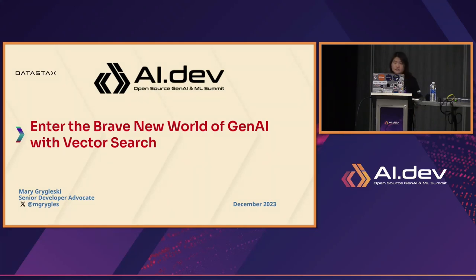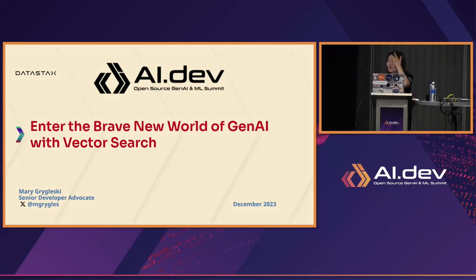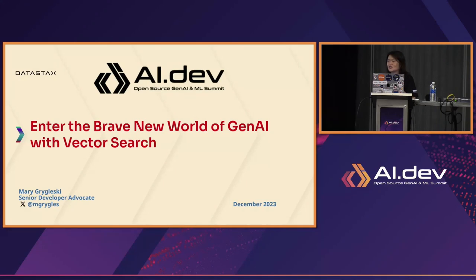My talk is really about entering the brave new world of Gen AI with Vector Search. May I ask how many of you are already working with generative AI or any forms of that? Are you also a Cassandra user by any chance? Are you using our Astra database? Not yet — okay, so this would be more introductory. Bear with me. I'll also be talking about some introductory things just to set the stage about AI.